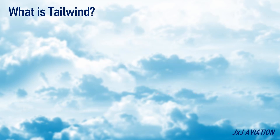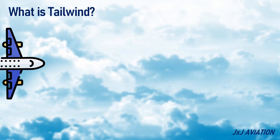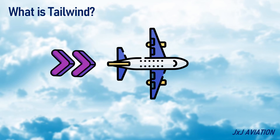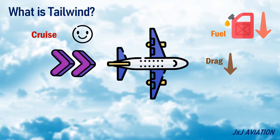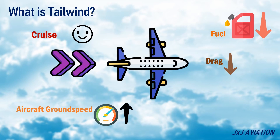What is tailwind? When the wind is in the same direction in which an aircraft is flying, then it is called a tailwind. Tailwinds are beneficial in the cruise phase because the drag is reduced, so there is a reduction in the fuel consumption. Tailwinds also result in an increase in the ground speed of the aircraft, which means a reduction in flight time.